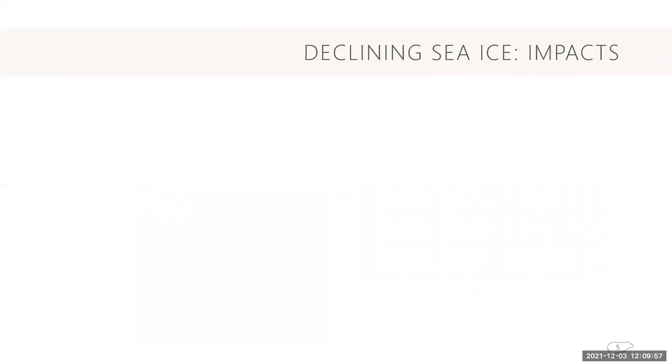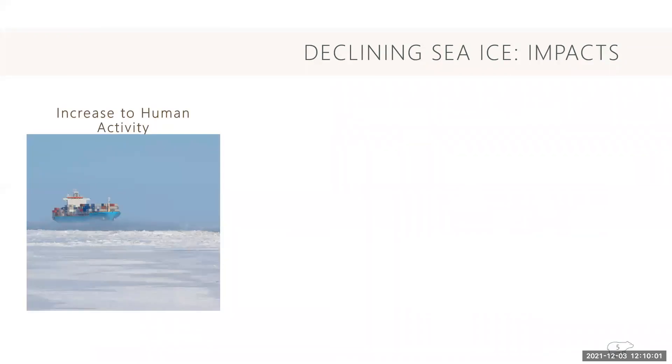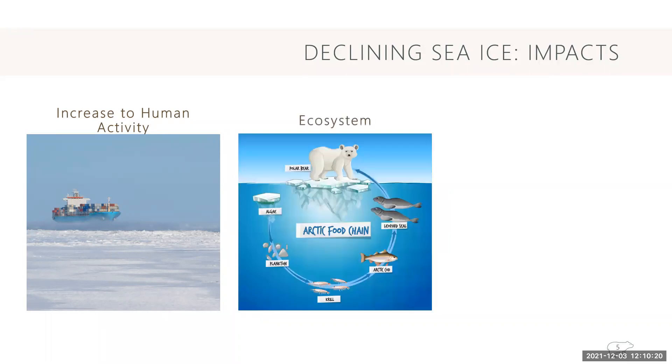There are many impacts to declining sea ice, and one of them is with a decrease in sea ice, naturally will come an increase to human activity, which includes tourism, commercial shipping, and a military presence, and all of which are difficult to predict the impact that it'll have to the environment. And also with decreased sea ice will be inevitable changes to the ecosystem, which currently relies on the presence of sea ice.